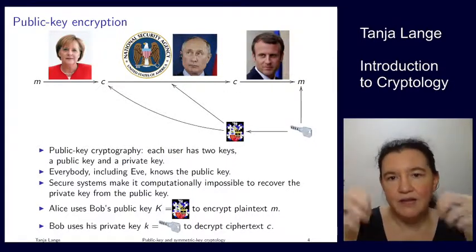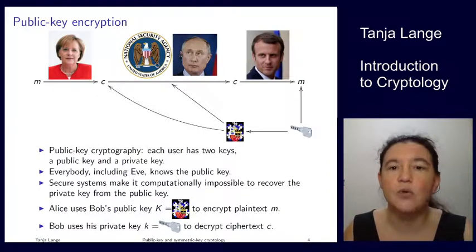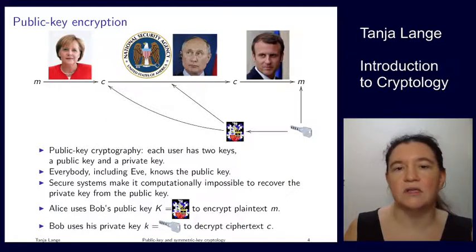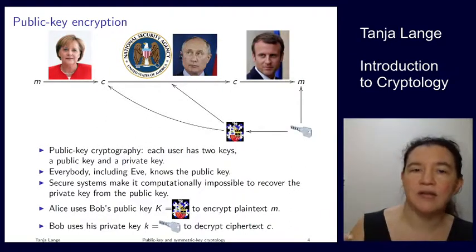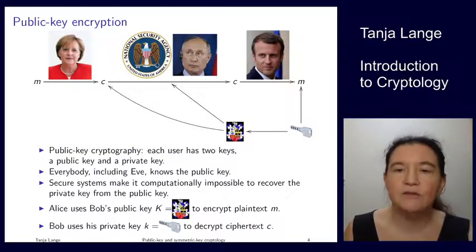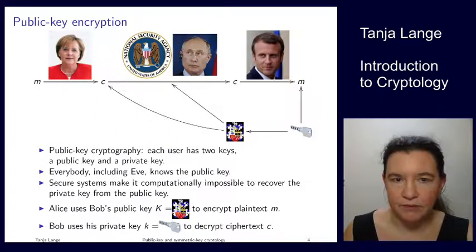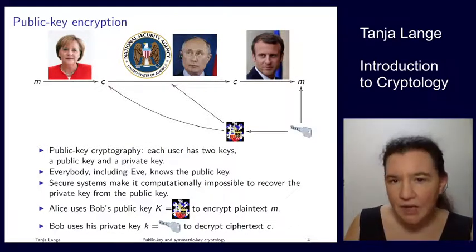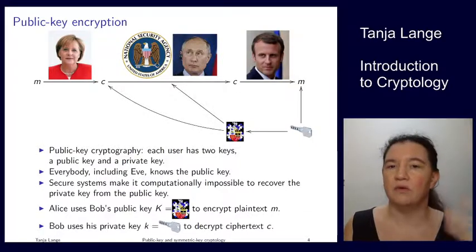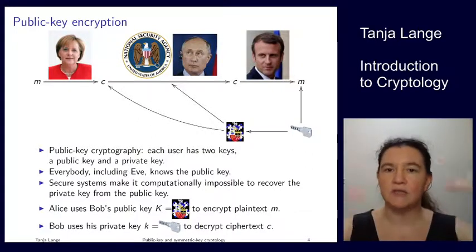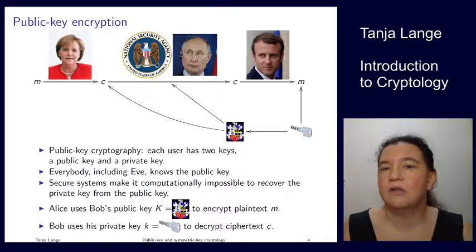The ciphertext should encapsulate the message in a secure way so that nobody can get the contents back. Eve sees the ciphertext going across, and Eve also has access to Bob's public key, and still Eve should not be able to get the message back. That's the premise of public key encryption. Computationally impossible means we have to understand how hard it is for Eve to break the system, and then make sure we scale up our keys sufficiently so that Eve has no chance.